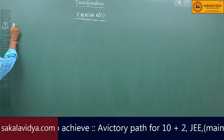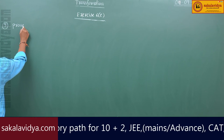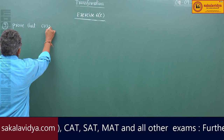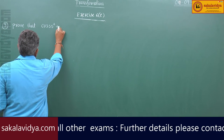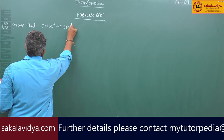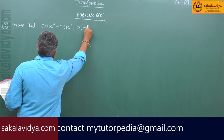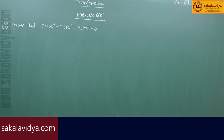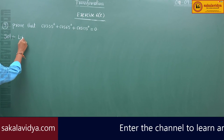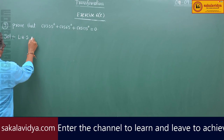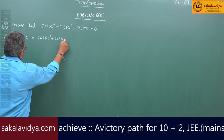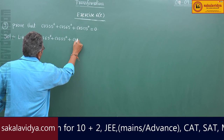Third problem: prove that cos55° plus cos65° plus cos175° is equal to 0. Left hand side: cos65° plus cos55° plus cos175°.